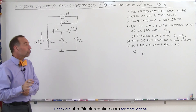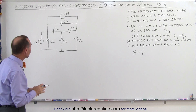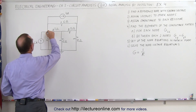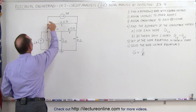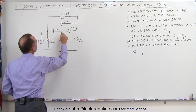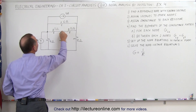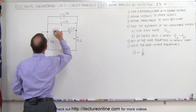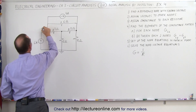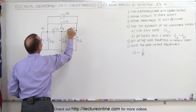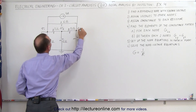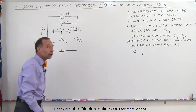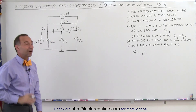Next we need to assign voltages to the nodes. How many nodes are there? Well, there is one node over here which is the same as this node — that's one node. There's another node over here and another node over there, so there are three nodes. Let's call them V1, V2, and V3. In other words, those are the voltages at each of those three nodes that we're trying to find.